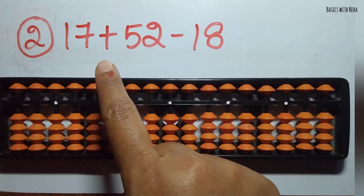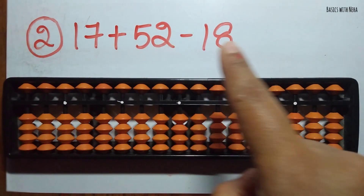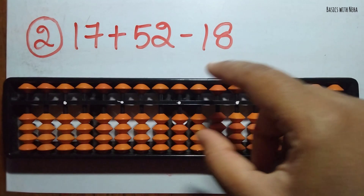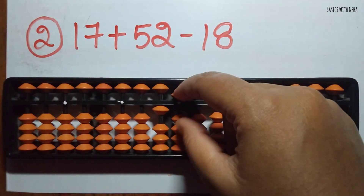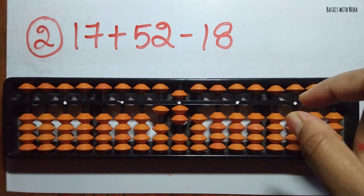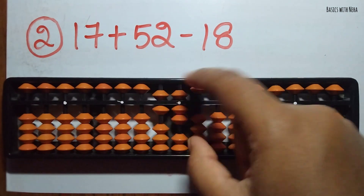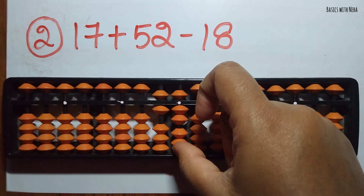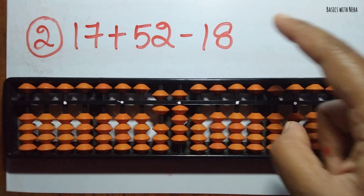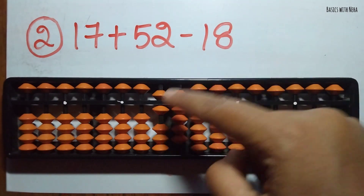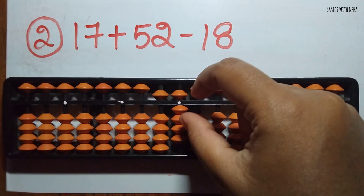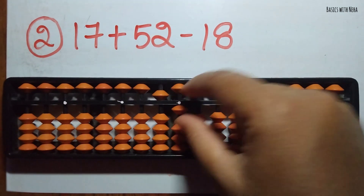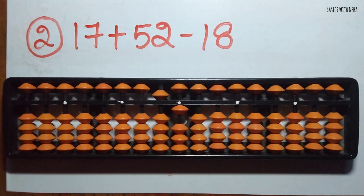Second question: 17 plus 52 minus 18. First take 17, now we should add 52 — add 5 in the 10's rod and add 2 in the 1's rod. Now we should minus 18 — minus 1 in the 10's rod and minus 8 in the 1's rod. The answer is 51.